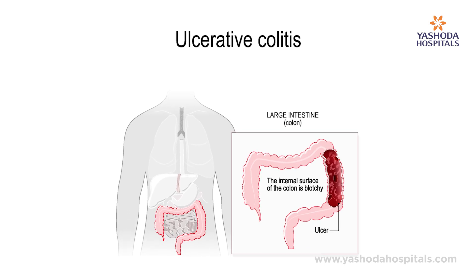What happens in ulcerative colitis? The large intestine is the only part which is involved. The large intestine is divided into the cecum, ascending colon, transverse colon, descending colon, sigmoid colon, and rectum. There can be ulcers or erosions anywhere in your large intestine, and these present with diarrhea, pain abdomen, and bloody diarrhea.